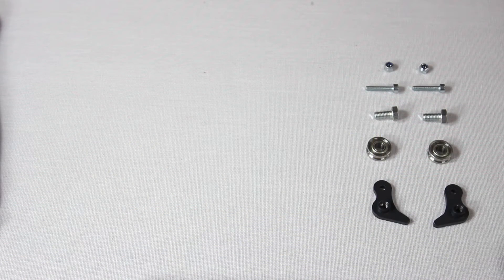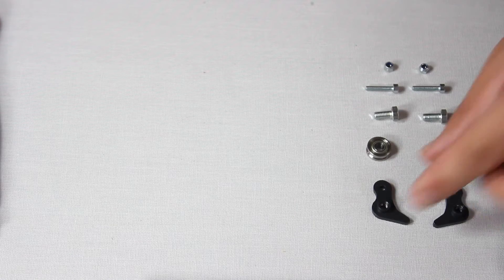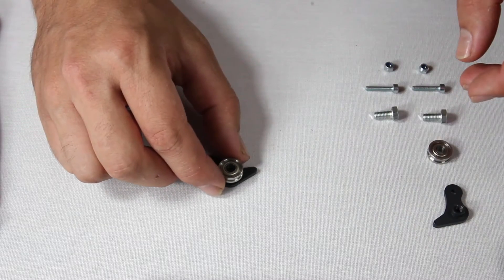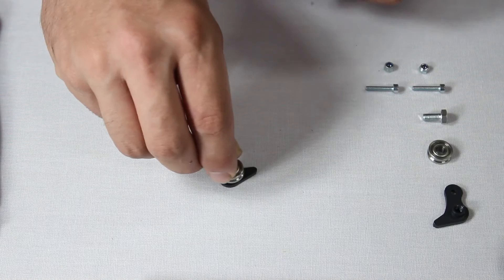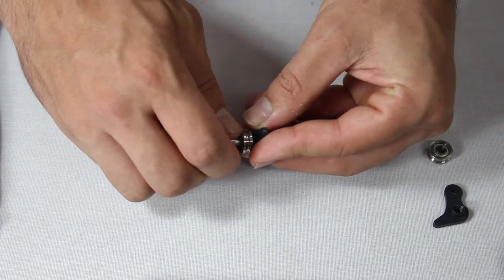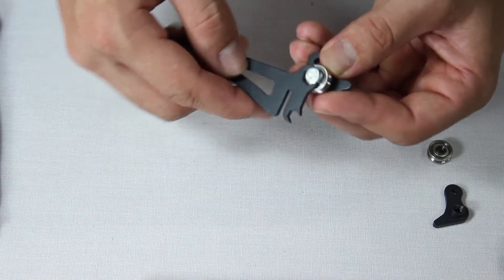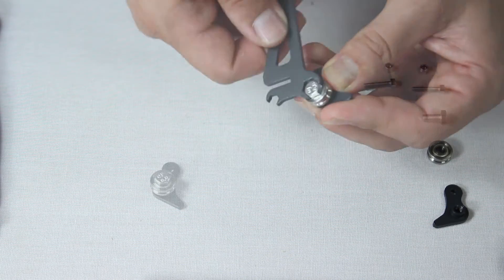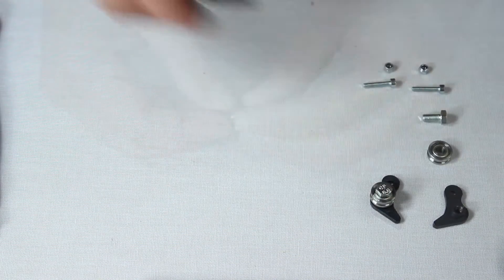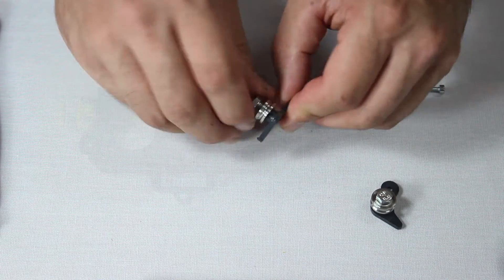For our next task, we'll be pre-assembling some components as you can see here. Screw in the bolts by hand, then tighten it well with the spool holder. Repeat with the other pieces.